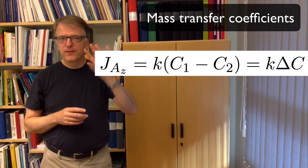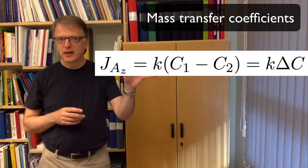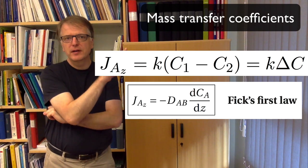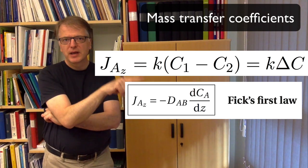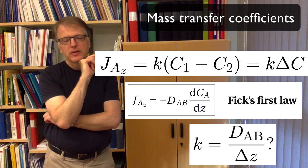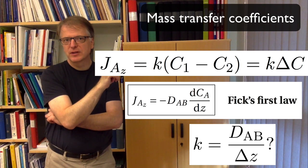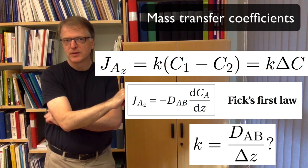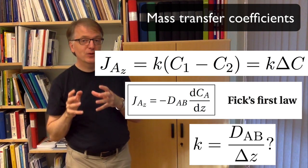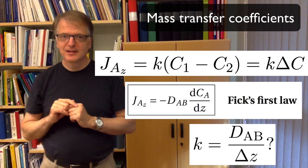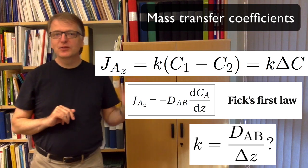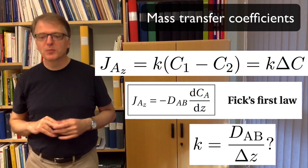But wait a minute, if you have an equation like that and you have Fick's first law, you can compare the diffusivity and the mass transfer coefficient. Then maybe you realize that perhaps the mass transfer coefficient is the diffusivity divided by the distance. Perhaps. We will come back to that later and show that that might be the case, but it might not be exactly the case. So this is the two-film theory that says this, but we will talk more about that later.